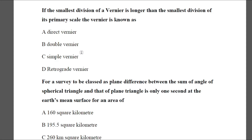Question 6: If the smallest division of a vernier is longer than the smallest division of its primary scale, the vernier is known as — Option A: direct vernier, Option B: double vernier, Option C: simple vernier, Option D: retrograde vernier. The answer is D — retrograde vernier.